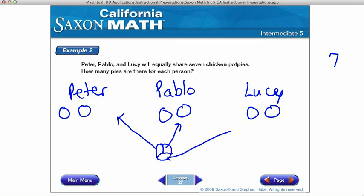and a third is going to go to Lucy. So Peter will have two and one third pies, because he has two wholes, plus a third of this last pie. Pablo has two and a third, and Lucy also has two and a third chicken pot pies.